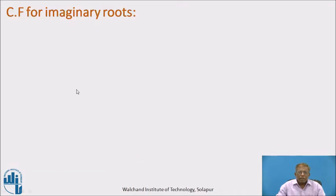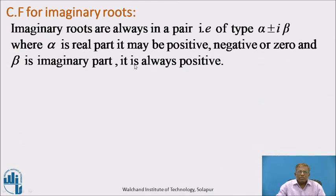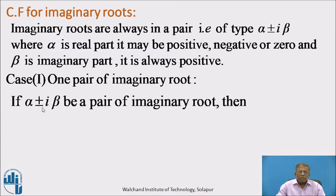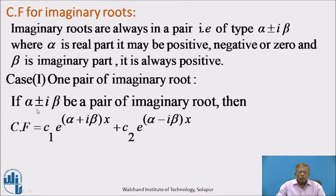Now, complementary function for imaginary roots. As we know, imaginary roots always occur in pairs of the type α ± iβ, where α is the real part (which may be positive, negative, or zero) and β is the imaginary part (always positive). Case 1 — one pair of imaginary roots: if α ± iβ is a pair of imaginary roots for the auxiliary equation, then there are two complex roots α+iβ and α−iβ, so two constants c1 and c2 are taken. Therefore CF = c₁e^((α+iβ)x) + c₂e^((α−iβ)x).